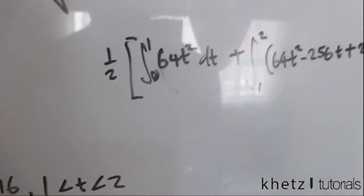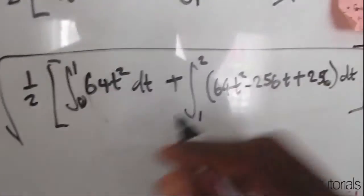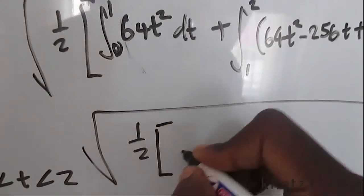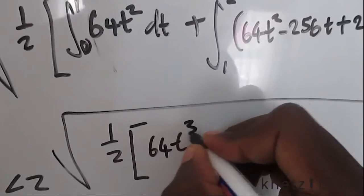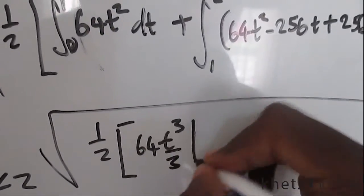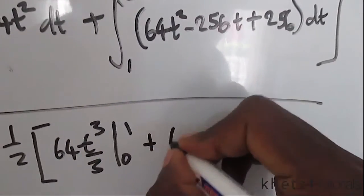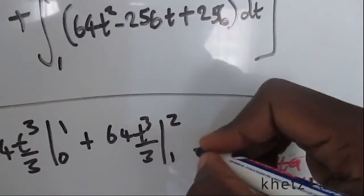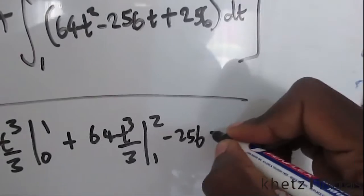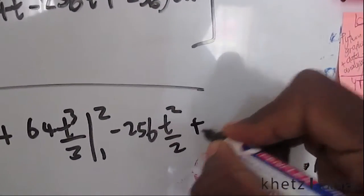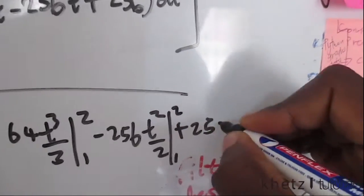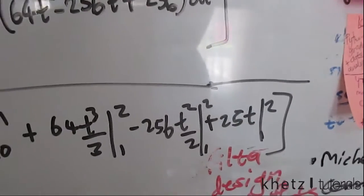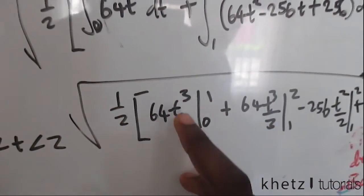So now I have to compute the integral of this, not forgetting the square root. Computing the integral, we're going to have 64 t to the 3 divided by 3 from 0 to 1, then you're going to have 64 t to the 3 divided by 3 from 1 to 2, then you're going to have the negative of 256 t squared divided by 2, then you're going to have plus 256 t from 1 to 2 as well, all of that in this huge bracket.